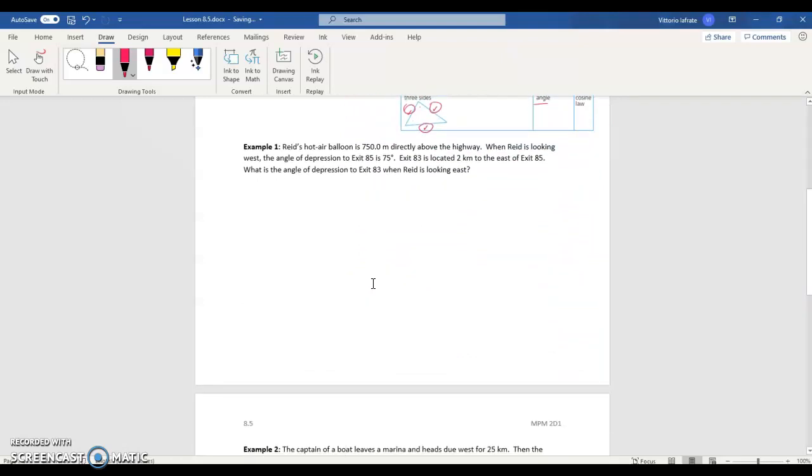We're going to try this problem out here. We have a hot air balloon that's 750 meters above the ground, or the highway. When Reed is looking west, the angle of depression to the exit, which is exit 85, is 75 degrees. When he's looking east, exit 83 is located 2 kilometers to the east of exit 85. And we want to know what the angle of depression is to exit 83 when Reed is looking east.